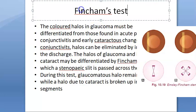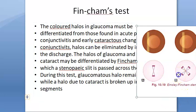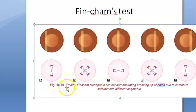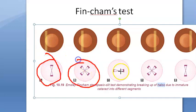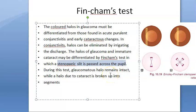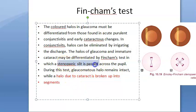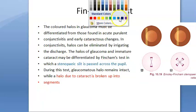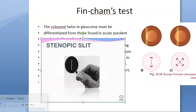The Fincham's test — also called the Maddox-Fincham steno peak slit test — tells you whether the colored halo is due to glaucoma, cataract, or conjunctivitis. A steno peak slit is passed across the pupil horizontally and vertically, and the patient reports whether the colored halo breaks up or not.